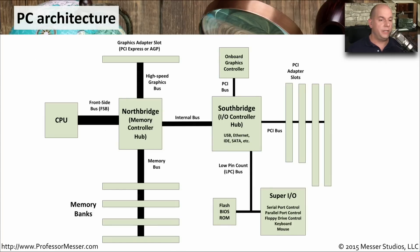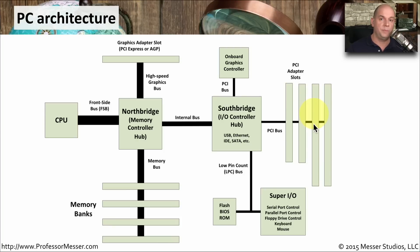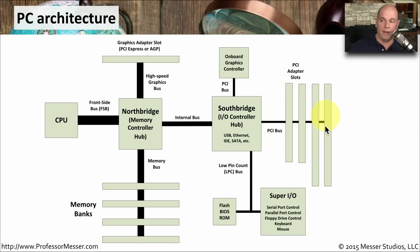Here's a block diagram of a traditional PC architecture. Although a number of these components are now collapsed into single chips and we may have different components plugging into different parts of the motherboard, this is a very good overview showing what all of the different components might be. Some of these we might recognize, like the CPU and memory. Others, like the North Bridge or South Bridge, are topics we'll discuss in a future video. You can see this is a motherboard that supports PCI adapter slots, which we use to connect different components and expand the capabilities of our motherboard.